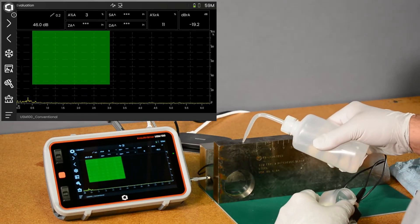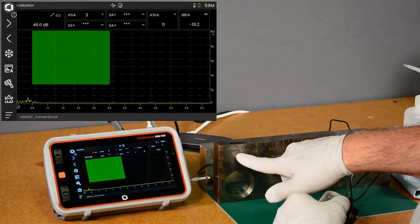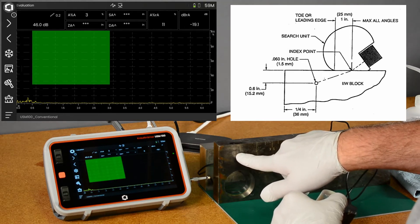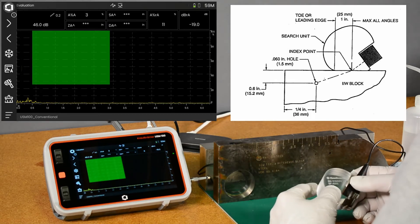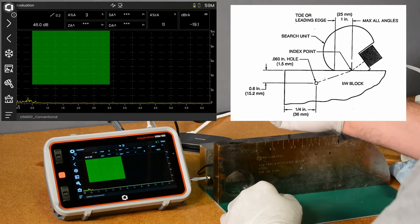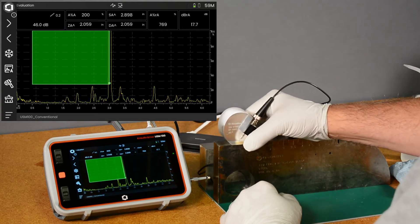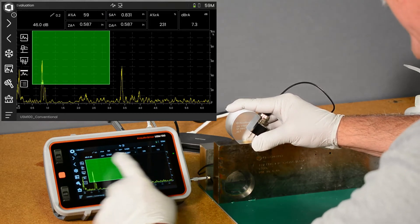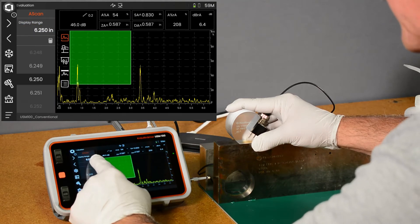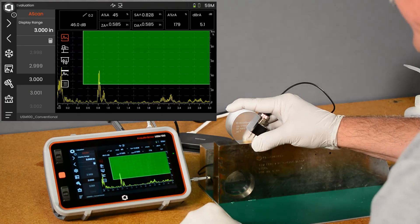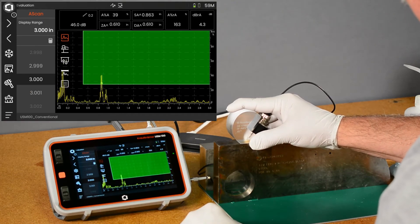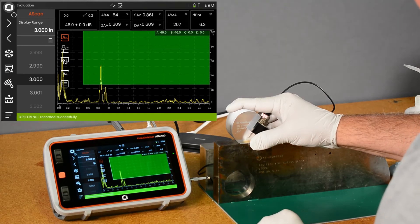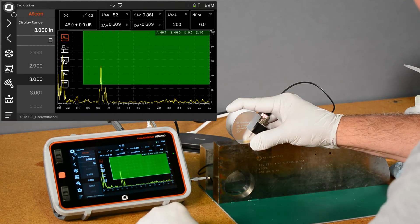Typically our calibration for AWS uses the one sixteenth inch hole at 0.6 inches. I believe that's one and a half millimeters at 15mm. We have our AWS probe and wedge. We're going to peak up on that indication. We have a lot of range selected, let's take our range down to three inches. We're going to peak up on that hole and hit the calibrate button.